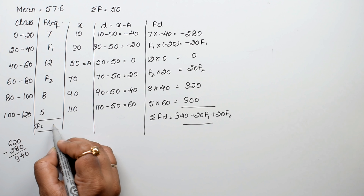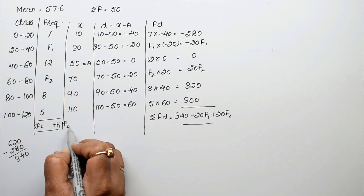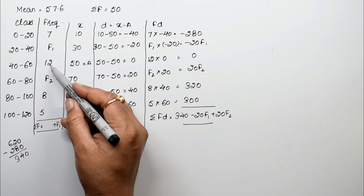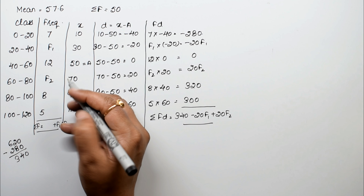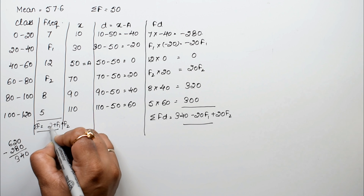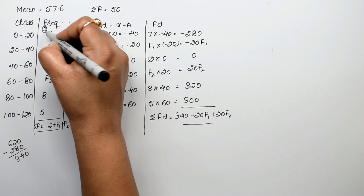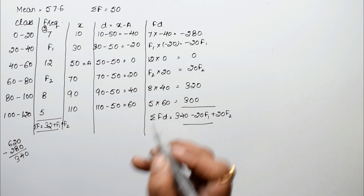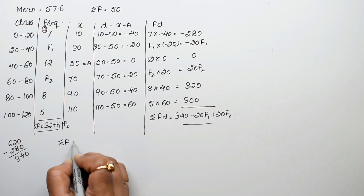For summation f: the known frequencies are 7 plus 12 plus 8 plus 5 equals 32, and we still have f1 and f2 unknown. So summation f equals 32 plus f1 plus f2.